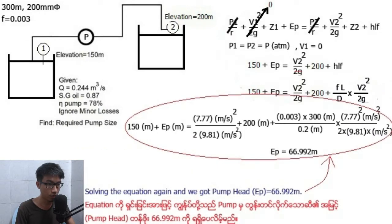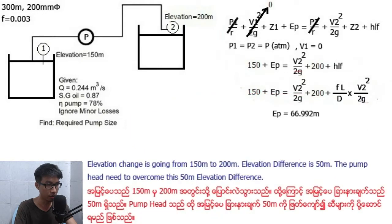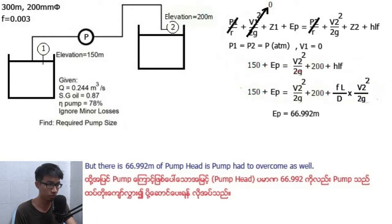Gravity g is 9.81 meters per second squared. Solving the equation, we got pump head Ep equal to 66.992 meters. Elevation change is going from 150 meters to 200 meters. Elevation difference is 50 meters. The pump head needs to overcome this 50 meter elevation difference, but there is 66.992 meters of pump head needed to overcome head loss as well.